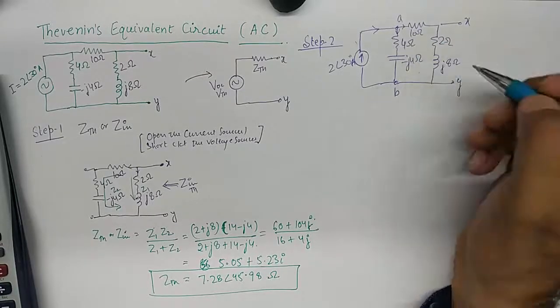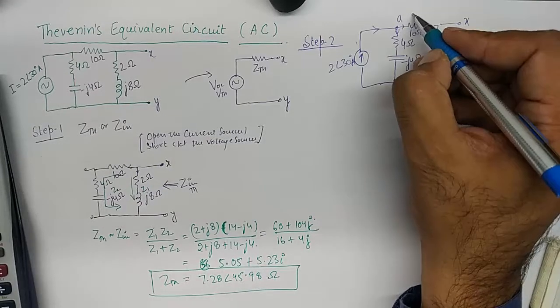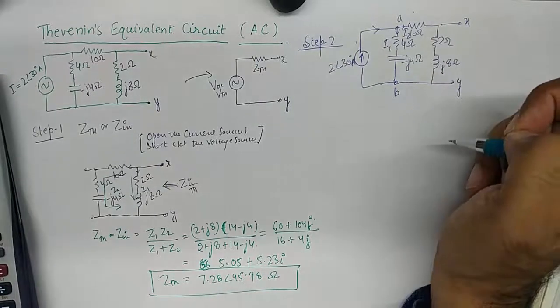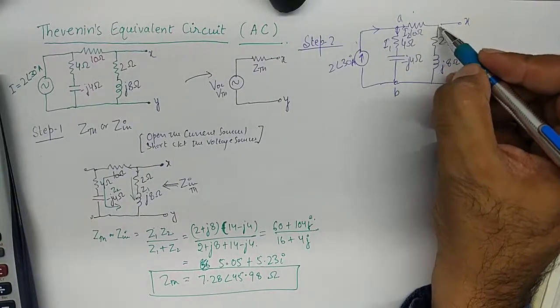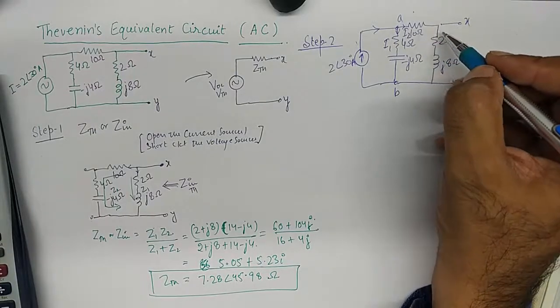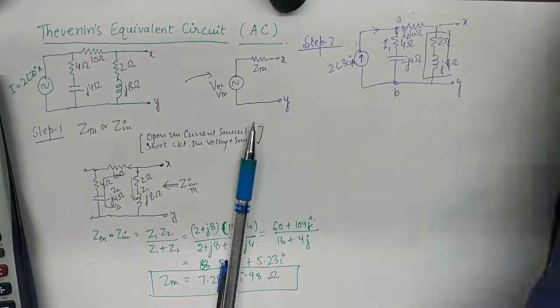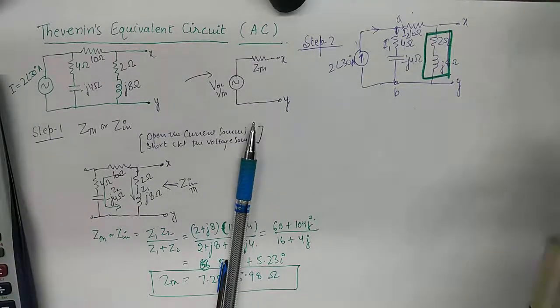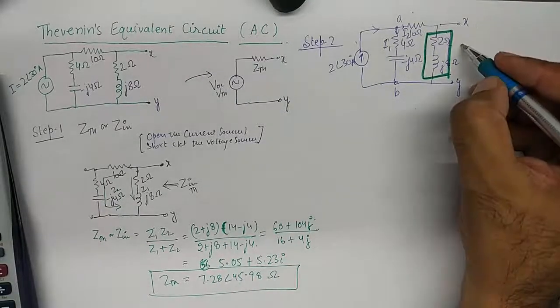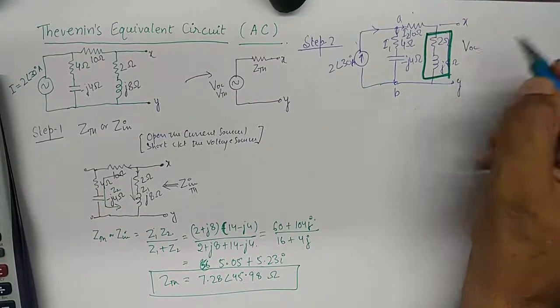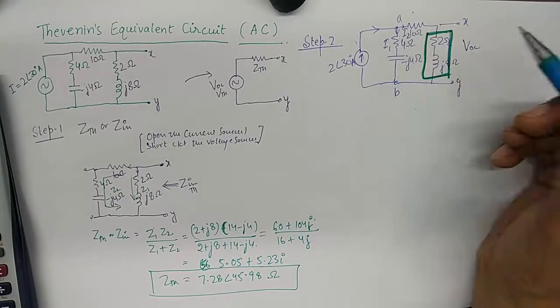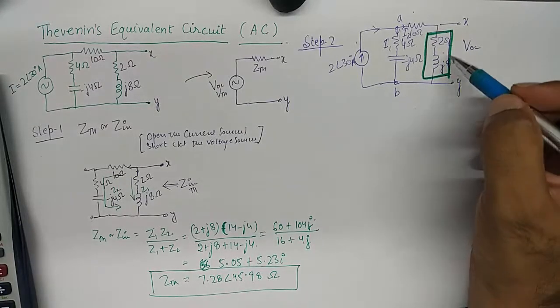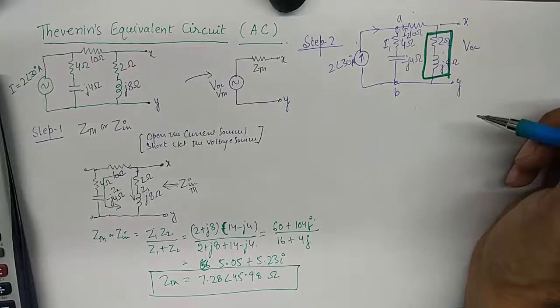And if I am able to calculate this current, I label this current as I1 and I label this current as I2. If I am able to calculate I2, this I2 will flow in this branch, and when this I2 passes through this set of impedance, it will cause some voltage to be dropped and that voltage is nothing but VOC. So what I need to do is simply calculate I2 and then multiply it with this impedance to find VTH or VOC.